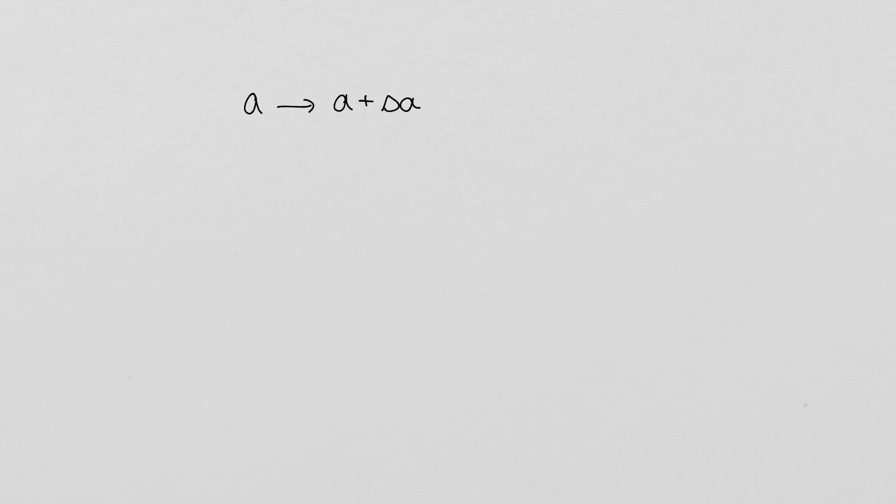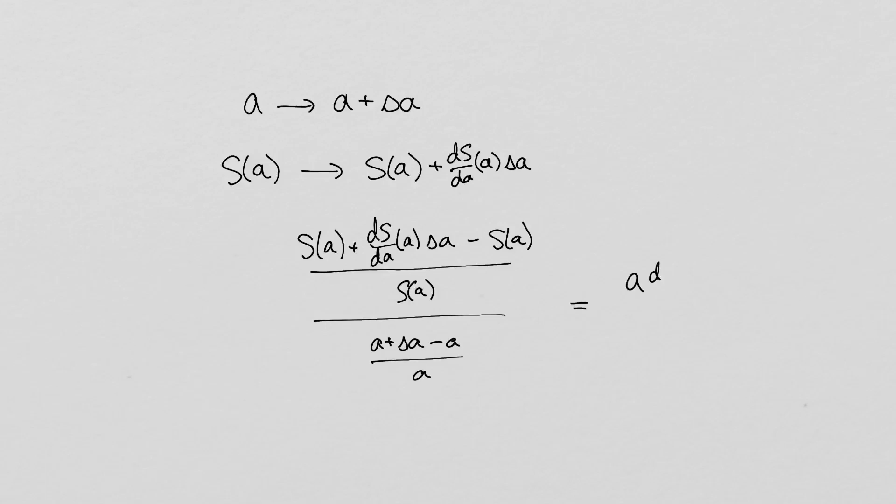To be more precise, the relative error of the solution if the initial data is a plus delta a instead of a is the derivative of s of a times delta a divided by s of a, and the relative error in the input is delta a over a. Taking the ratio of these quantities, we obtain the formula absolute value of a times absolute value of the derivative of a divided by absolute value of s of a.